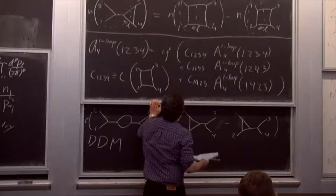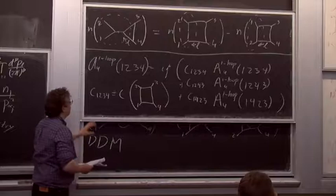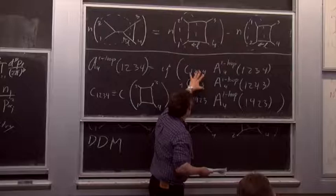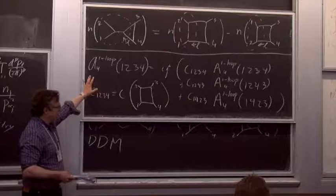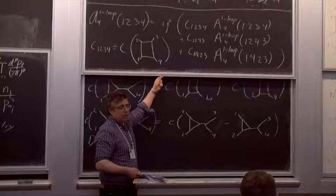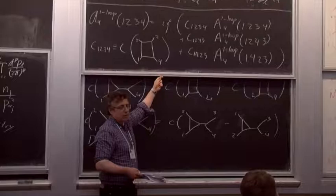This formula is very general — it's just color. It's true for any theory: QCD, fundamental representation with some differences in what you put in, but it's not a big deal to include fundamental representation. In adjoint representation it's any theory of Yang-Mills — no supersymmetry, N=1 supersymmetry, N=2, and so forth. So let's store that formula.